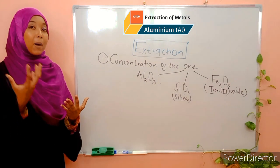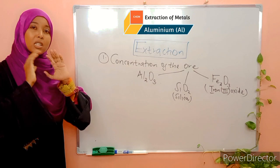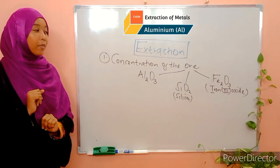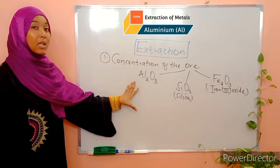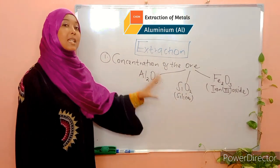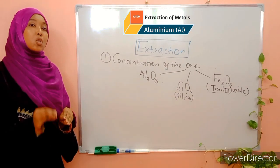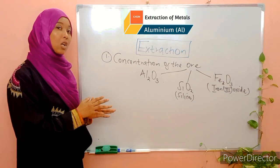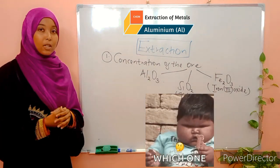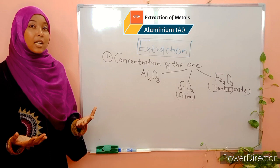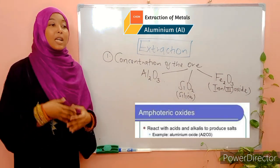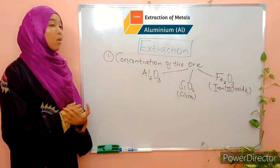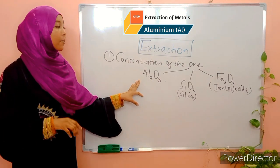After crushing, the powdered ore is then added to hot concentrated sodium hydroxide. We have three oxides present in the powdered ore: aluminium oxide, silicon-4-oxide, and iron-3-oxide. Now sodium hydroxide is a basic solution, so out of these three, only two are going to react with it. Aluminium oxide is an amphoteric oxide — it reacts with acids as well as bases — so it reacts with the sodium hydroxide solution, leading to the formation of sodium aluminate.